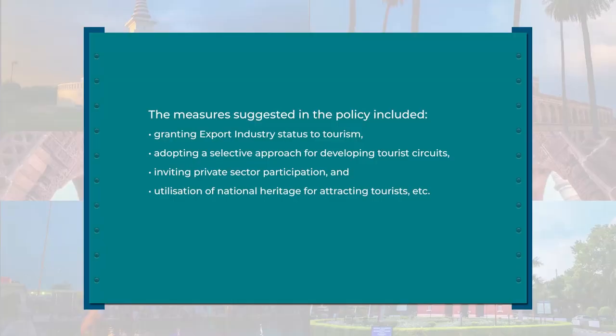The main thrust was aimed at presenting India to the foreign tourist as the ultimate holiday resort. The measures suggested in the policy included granting export status to tourism, adopting a selective approach for developing tourist circuits, inviting private sector participation, and utilization of national heritage for attracting tourists.